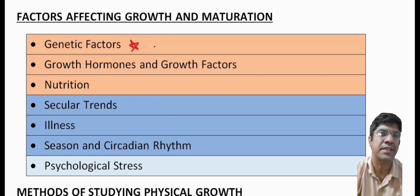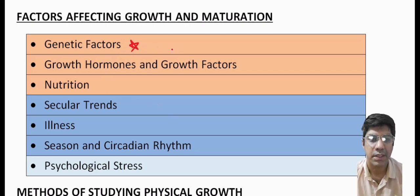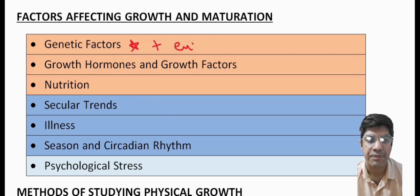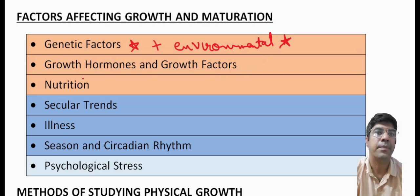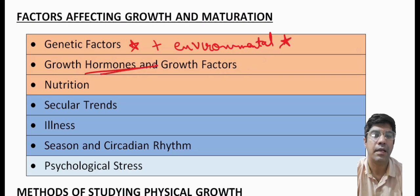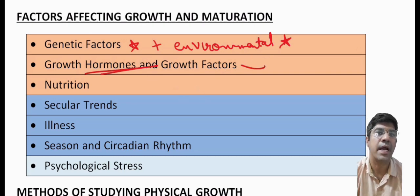Now let us discuss the factors that can affect growth and maturation. Number one is the genetic factor — genetic factors play a fundamental role in determining individual growth and maturation. Variation in genetic makeup can lead to differences in growth rate and ultimately adult height. These genetic factors can interact with environmental influences to determine the final outcome.